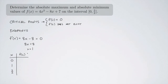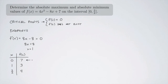Now we find the value of the function at these three values by plugging in. When x = 0, f(0) = 7. When x = 1, f(1) = 3. When x = 3/2, f(3/2) = 4. This tells us the absolute maximum is 7 (at x = 0), and the absolute minimum is 3 (at x = 1).